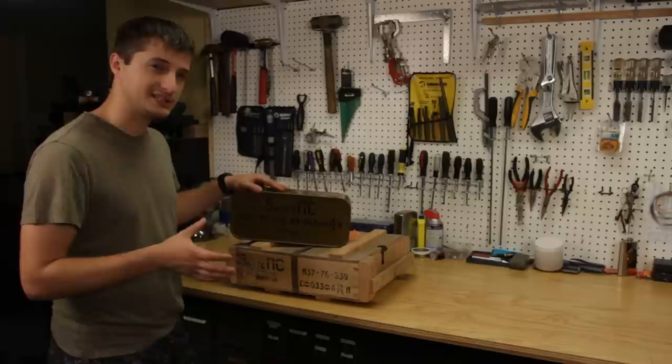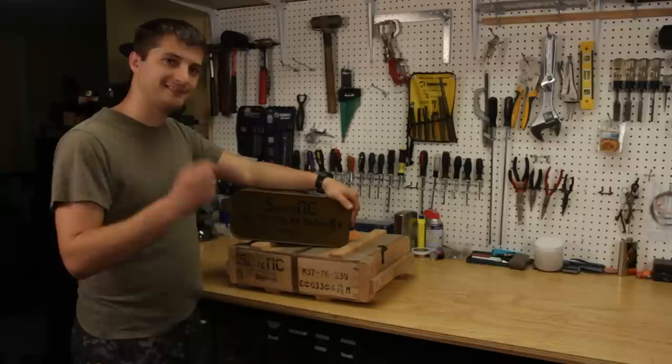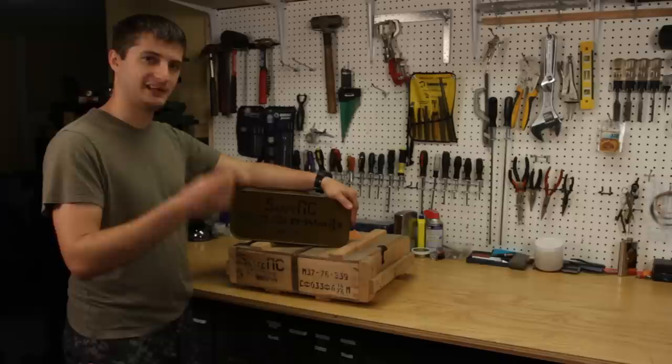Now typically whenever you're dealing with Russian style ammo such as this, or any kind of Soviet style can for that matter, it comes in a watertight, airtight can such as this. So the ammunition will be exactly the same the year it was manufactured and put in this tin. It will not corrode or rust, it will be fresh and new just like it was made yesterday.